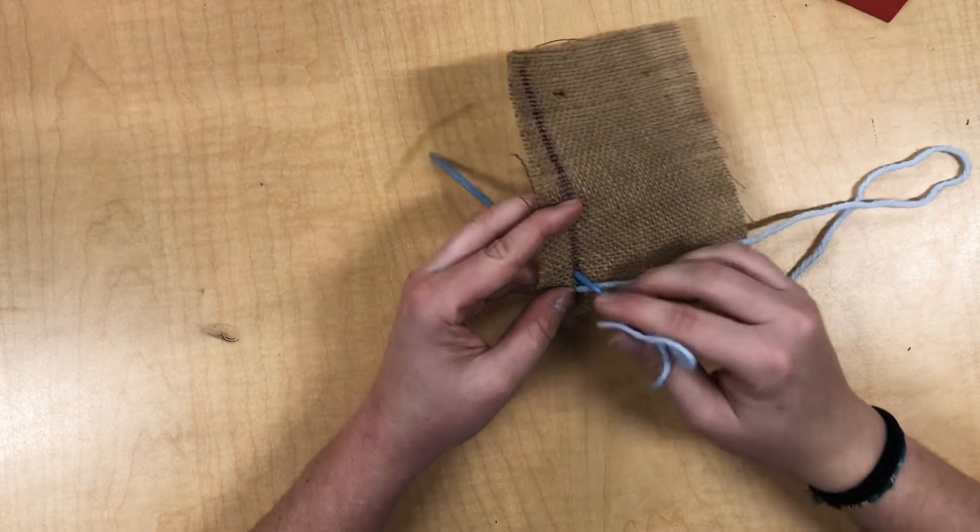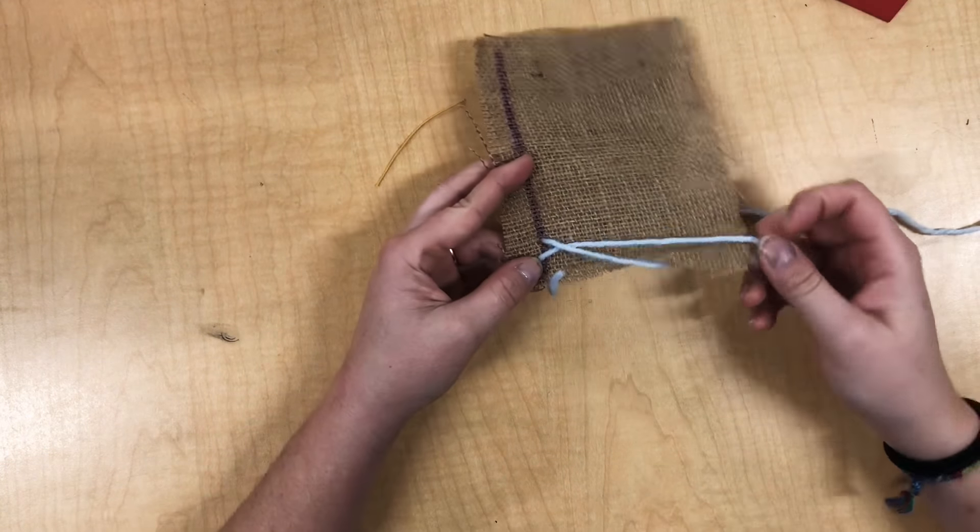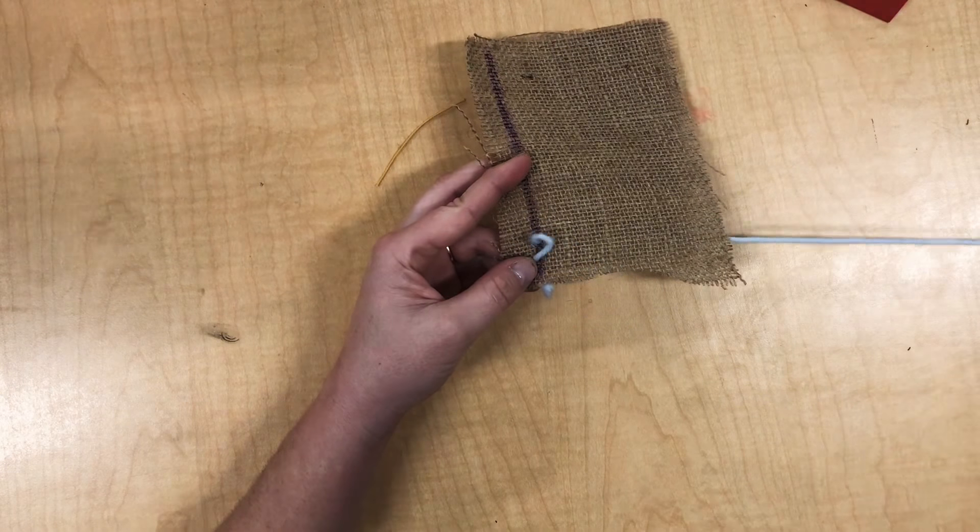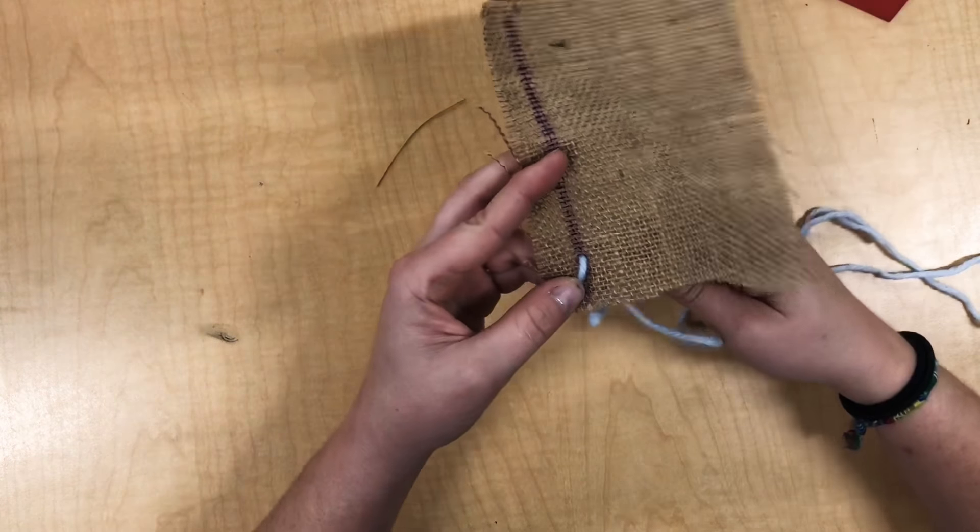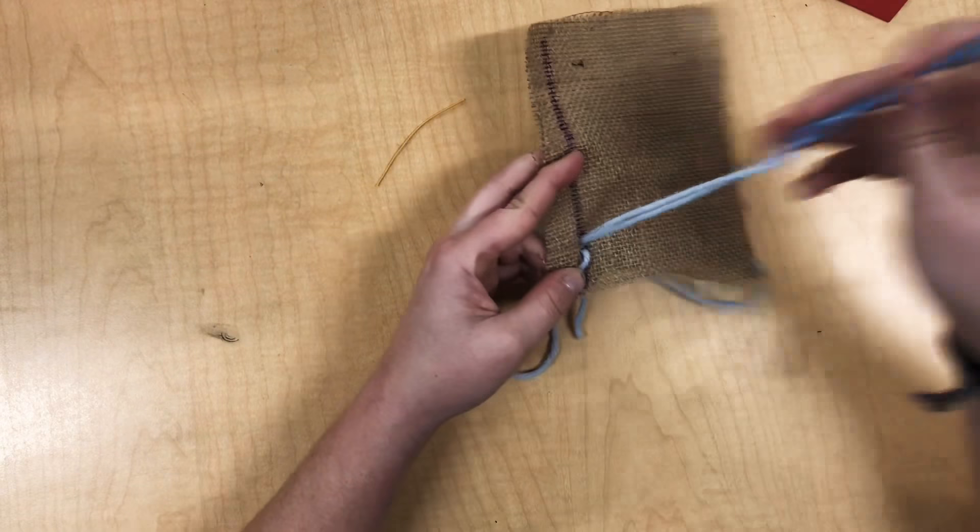Then I'm gonna follow this line. And I'm gonna keep my stitches pretty small. If it gets caught up, I gently pull it. Then I'm gonna take this needle, put it right back where it came out.